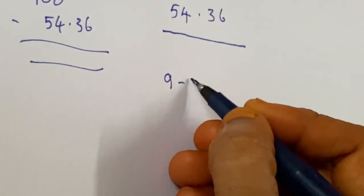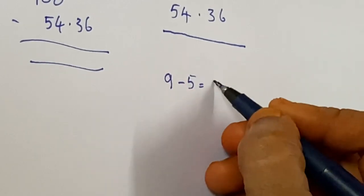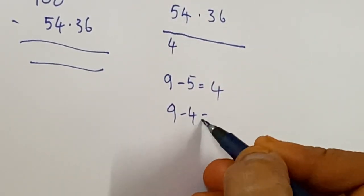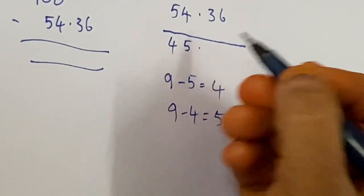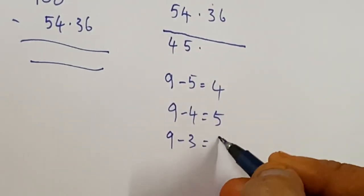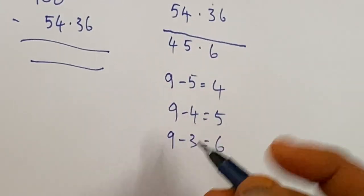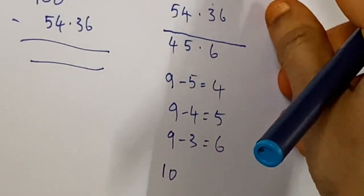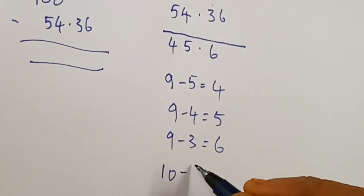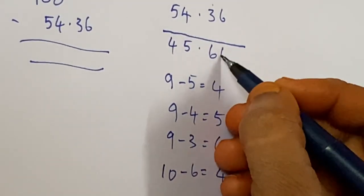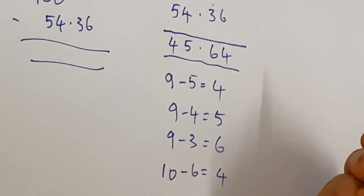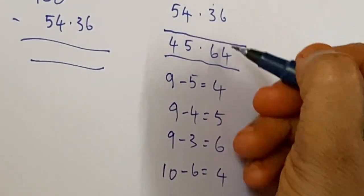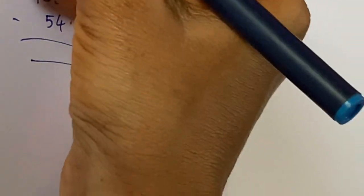9 minus 5 equals 4, so write the answer here. Next, 9 minus 4 equals 5, write the answer here. Next, 9 minus 3 equals 6, write 6 here. Last digit, so this is the last one, should be subtracted from 10. 10 minus 6 equals 4. So this is the answer. All the digits from 9 and the last digit from 10. That's why this rule is known as all from 9 and last from 10.